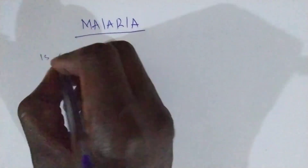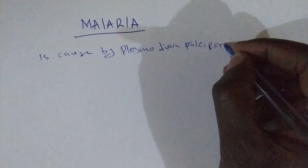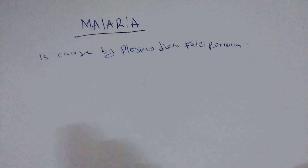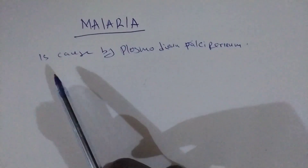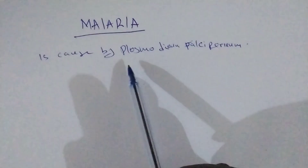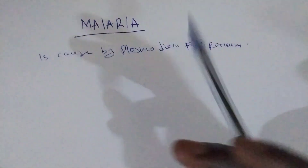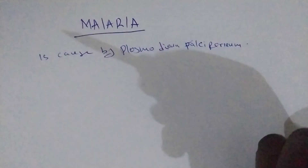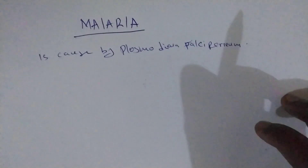Welcome back guys. Today we are going to see Malaria. Malaria is a disease caused by Plasmodium falciparum and it has five types.